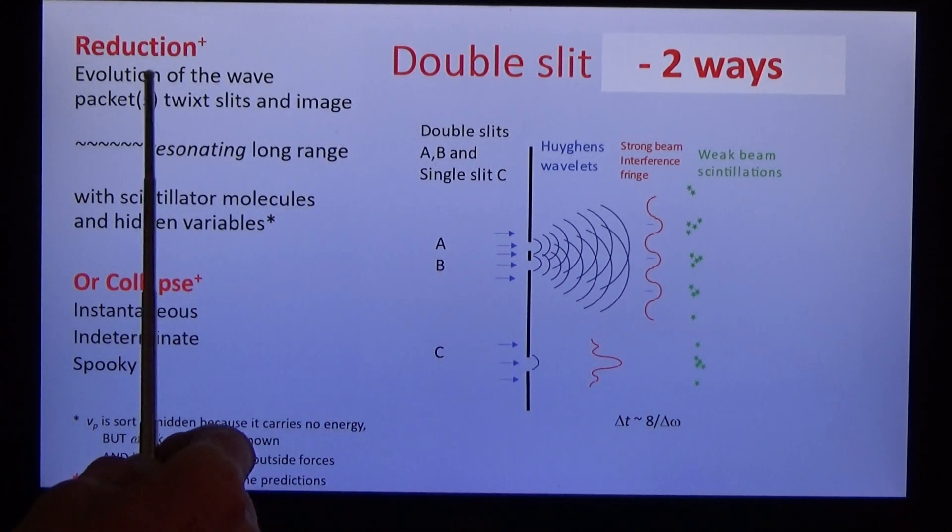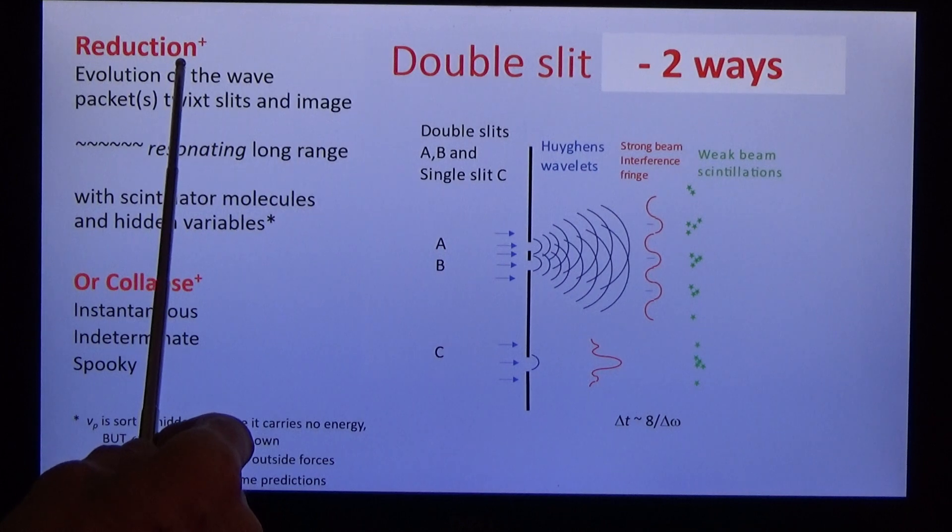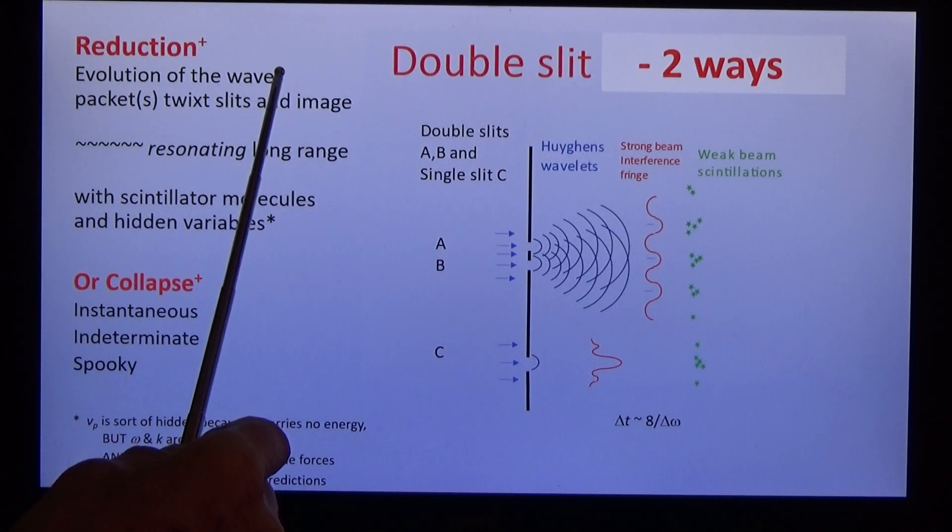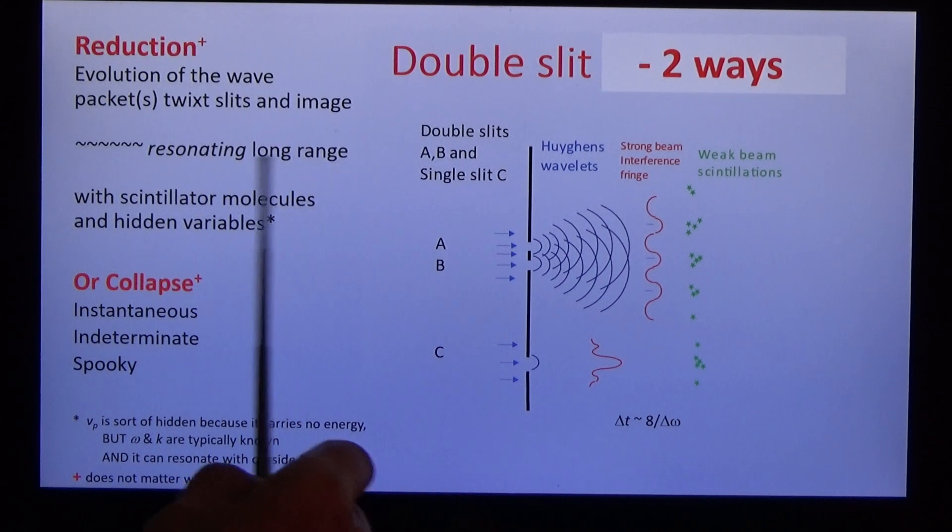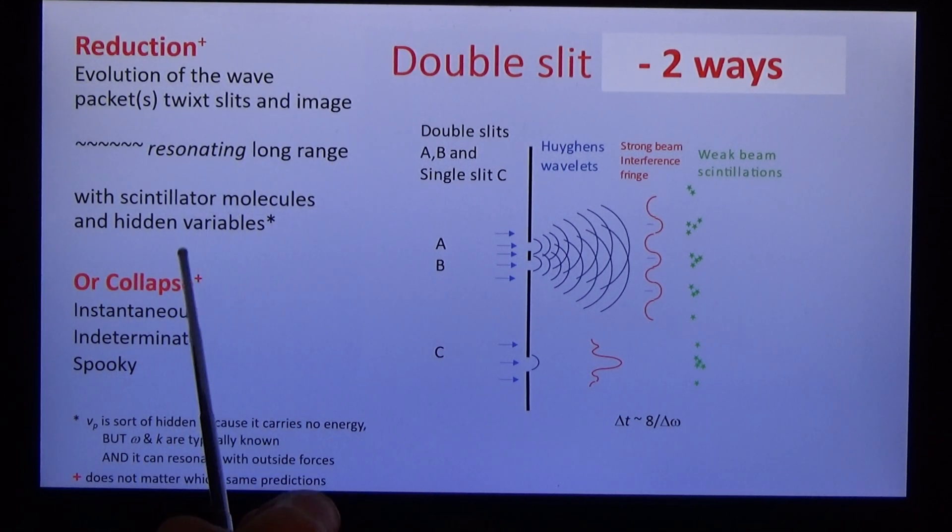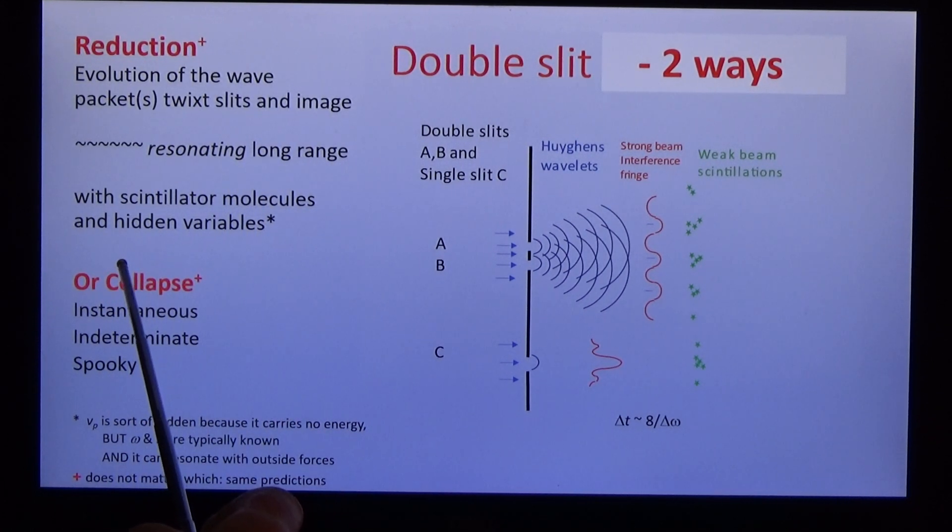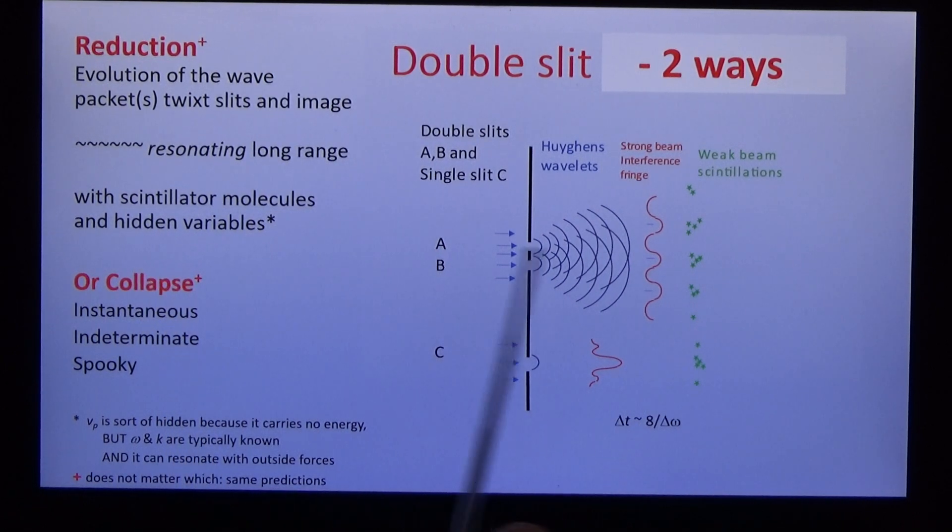So let's compare them. In reduction, physical reduction, the evolution of the wave between the slits and image occurs by resonating long range with the scintillator molecules. In mathematical quantum mechanics, the collapse is instantaneous, indeterminate and spooky.